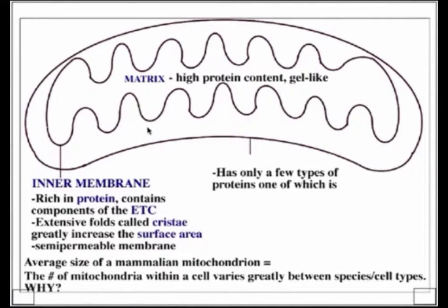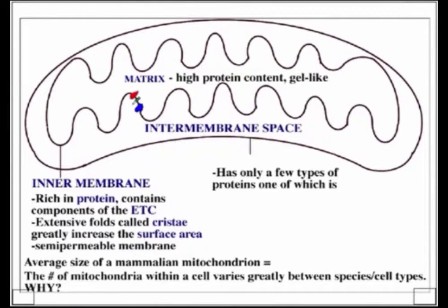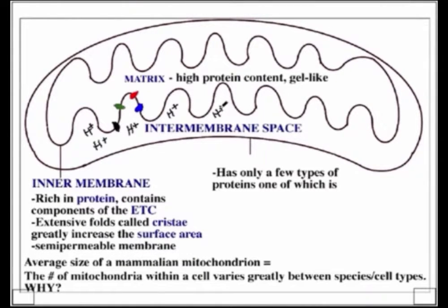The space between the inner and outer membrane is called the inner membrane space, and it is an extremely important location. As NADH reducing power is transferred to complexes 1 through 4 of the ETC, the power from the electrons is harnessed in the form of a proton motive force, or proton gradient, which forms in the inner membrane space. So the inner membrane space is the location where the PMF — the proton motive force — forms.